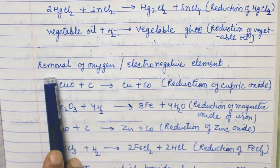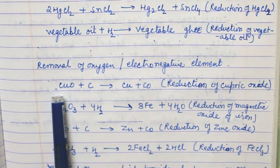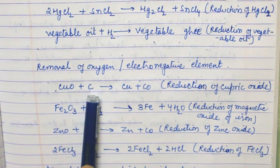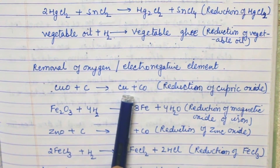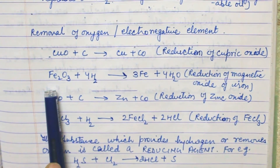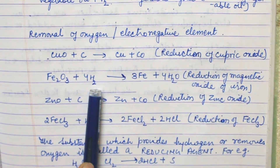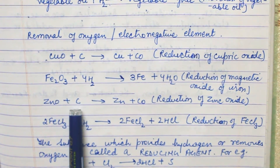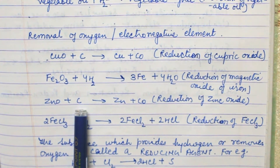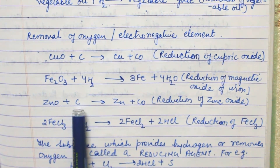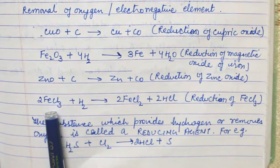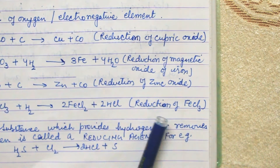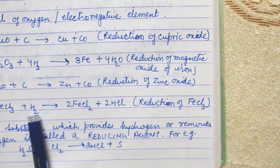The next definition of reduction is removal of oxygen or an electronegative element. Here copper oxide reacts with carbon — carbon takes oxygen from copper and forms carbon monoxide, reducing the copper. Next, Fe2O3 reacts with H2 — this H2 takes away oxygen from Fe, so it reduces Fe. Here carbon takes oxygen from zinc, so it reduces zinc. Here Cl is taken away with hydrogen, so reduction of FeCl3 takes place because it becomes FeCl2 after removing one chlorine.